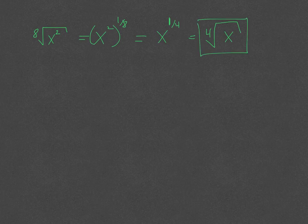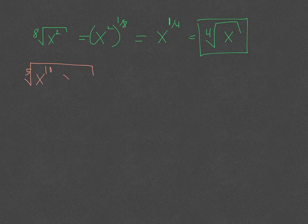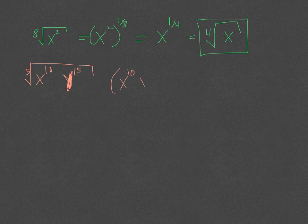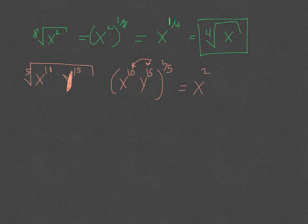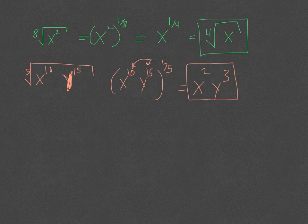For the fifth root of x to the tenth, y to the fifteenth: rewrite as x to the tenth, y to the fifteenth, all to the 1/5 power. Distribute the 1/5: 10 times 1/5 is 2, and 15 times 1/5 is 3. The simplified answer is x squared y cubed.